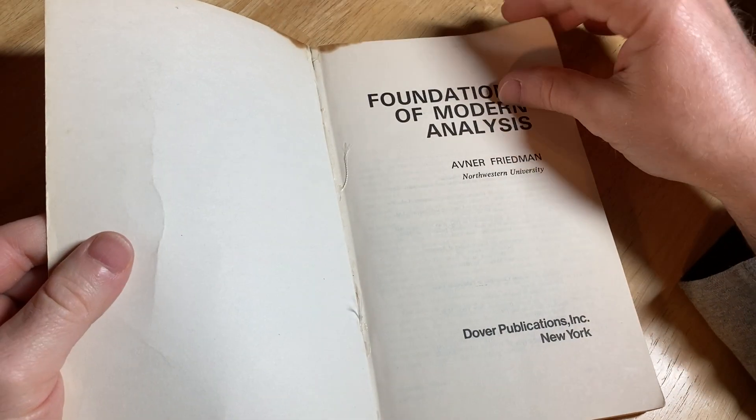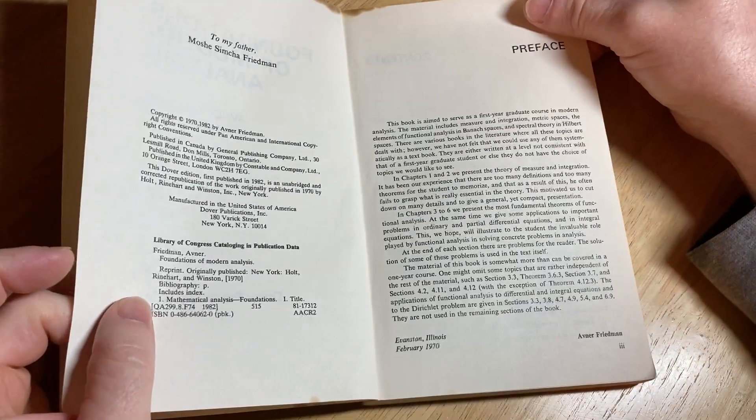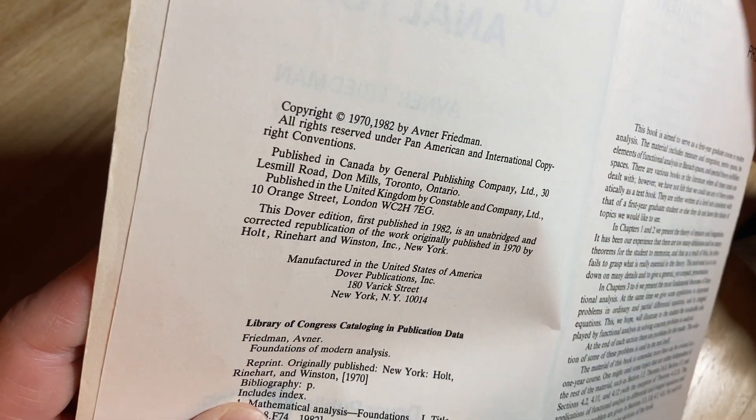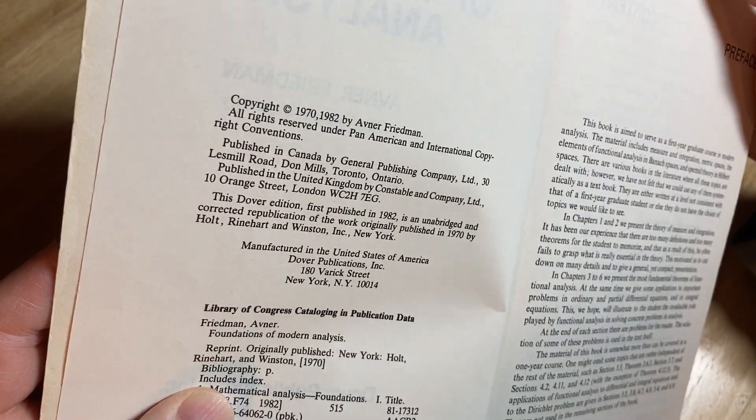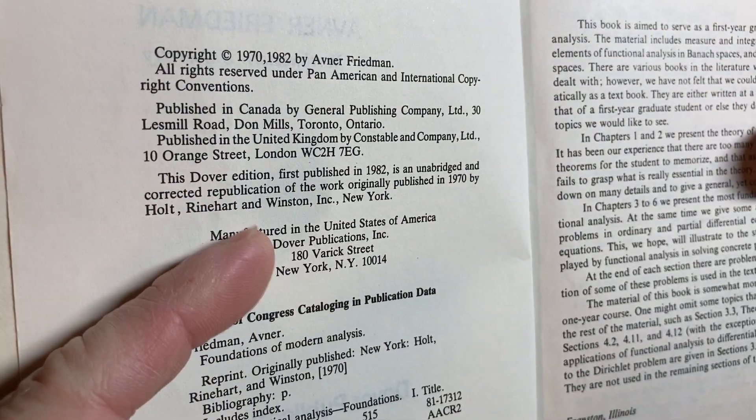Let me just show you the content so you see what I mean. It's a Dover book, by the way, so it's super inexpensive. That's probably why I bought it. Copyright 1970 and 82. So the 82 one is probably the Dover edition. Oh yeah, the Dover edition first published in 82.